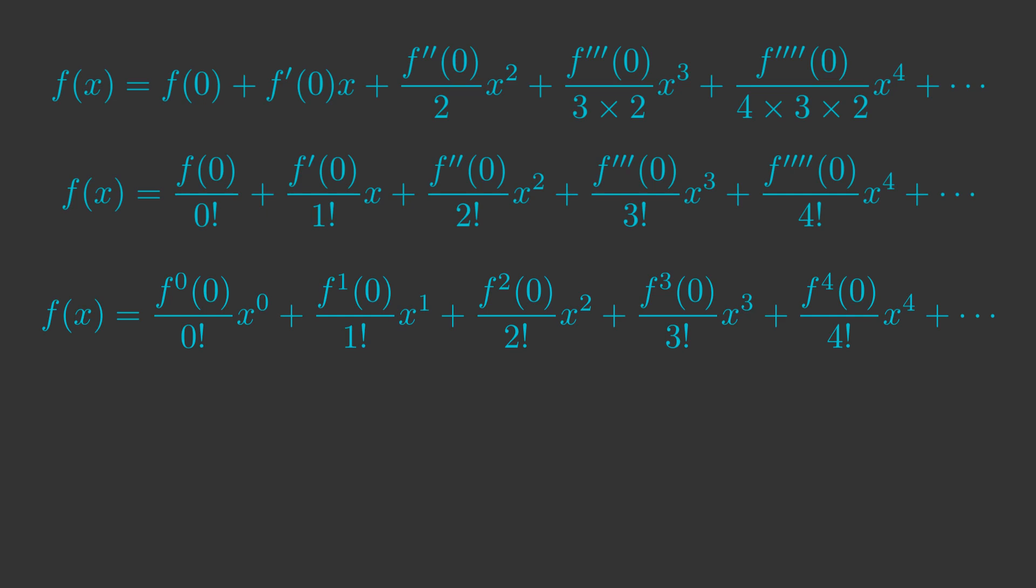With these simplifications we can now write the whole equation using sigma notation. Notice that the sum is now equal to f rather than just being approximately equal. This is because the sum includes all the terms right up to infinity.